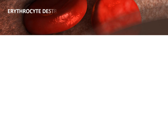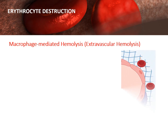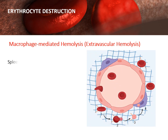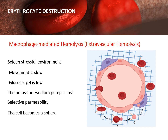Erythrocyte destruction occurs in two ways. First, macrophage-mediated hemolysis, or extravascular hemolysis: at any time, a volume of blood is in the spleen, generating an environment that is stressful to the cells. Movement through the red pulp is extremely slow, the available glucose in the surrounding plasma is depleted quickly, and the pH is low, which promotes iron oxidation. In this environment, aged RBCs succumb to the various stresses and reduce ATP production; membrane systems begin to fail, the potassium-sodium pump is lost, selective permeability of the membrane is lost, and water enters the cell. The discoid shape is lost and the cell becomes a rigid sphere that is not able to squeeze through the narrow spaces to exit the spleen and is ingested by macrophages.